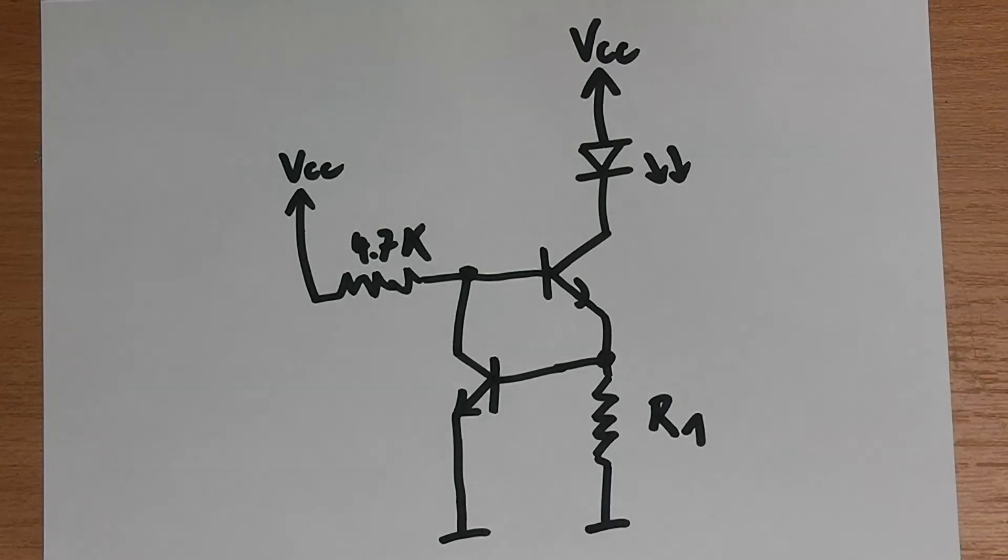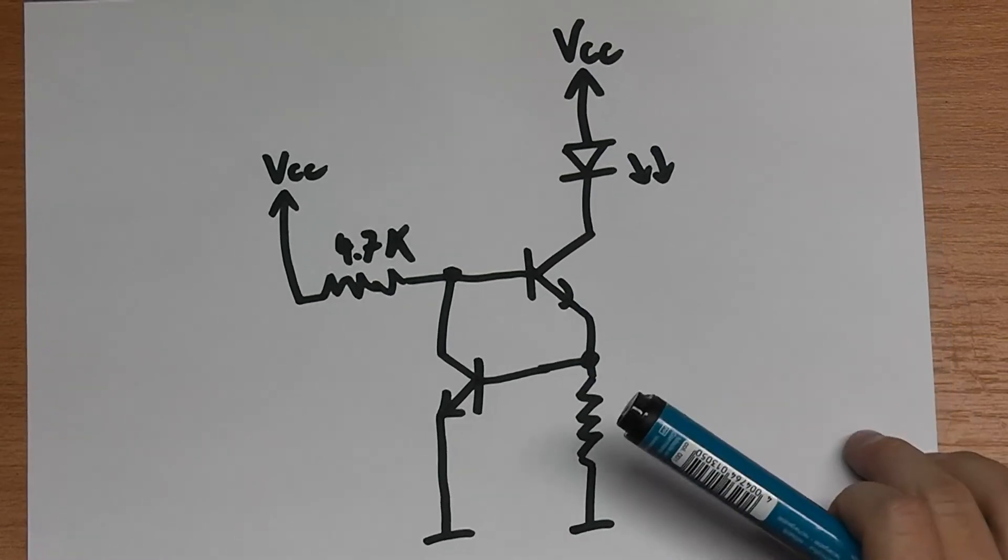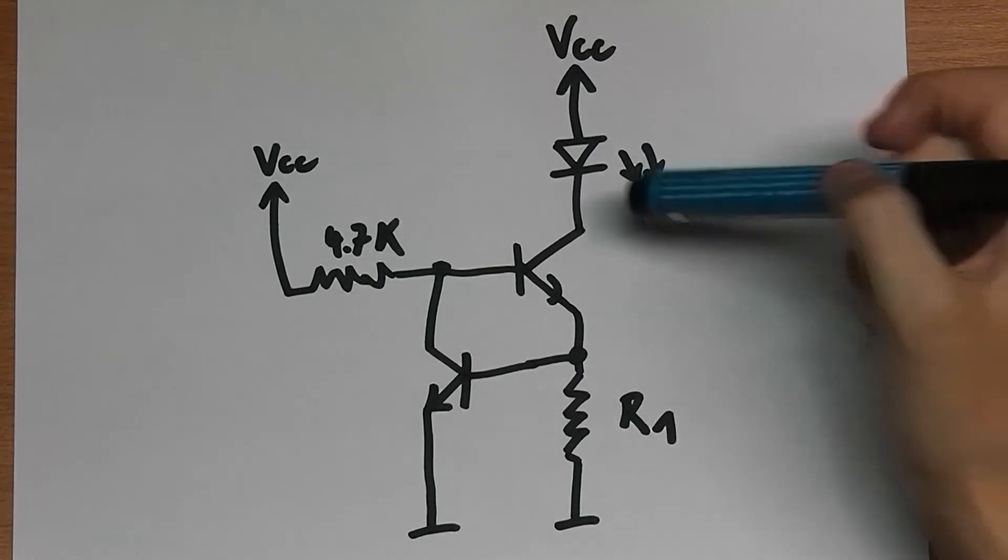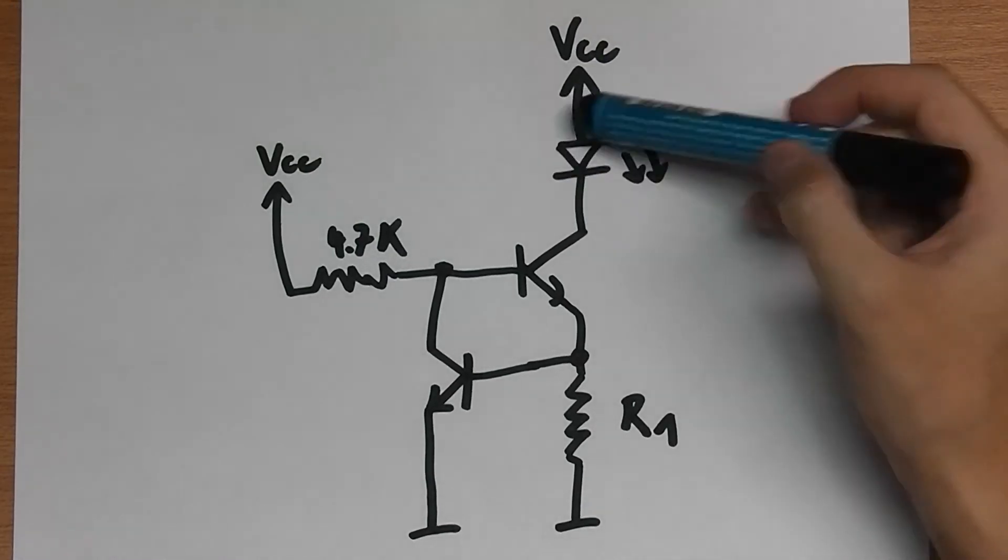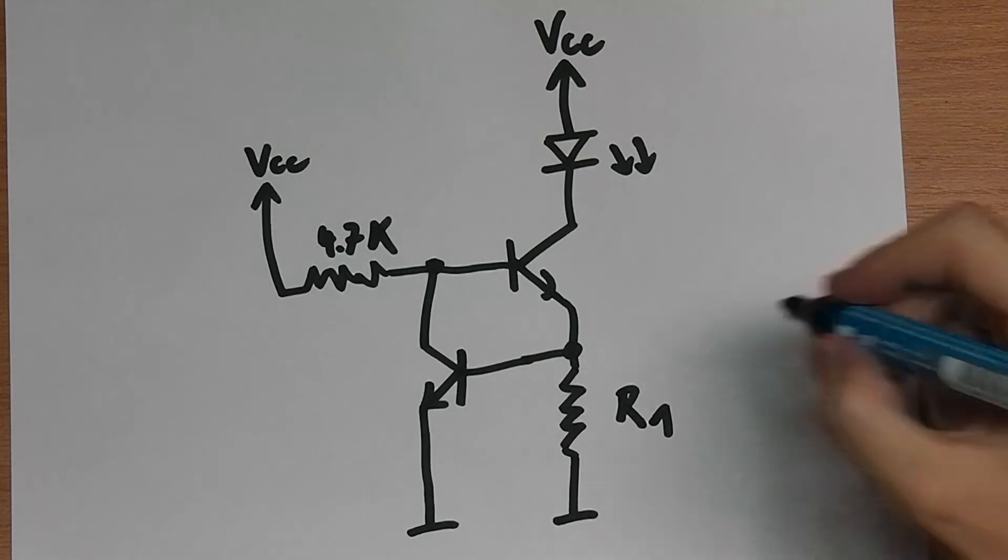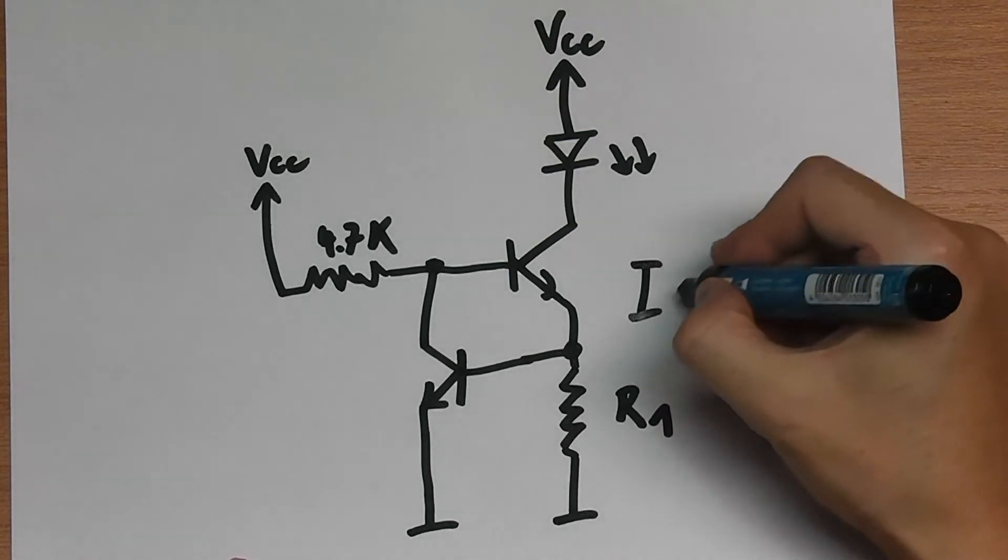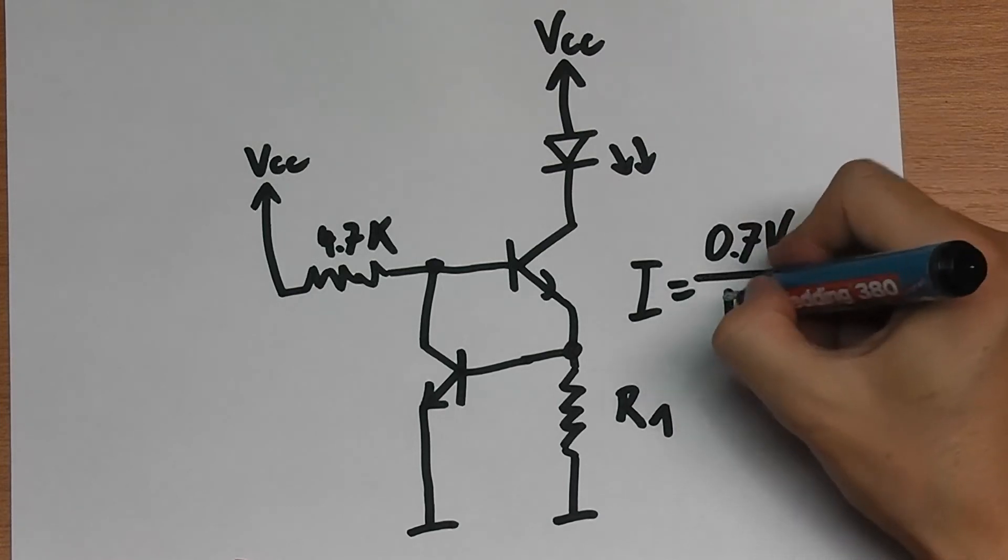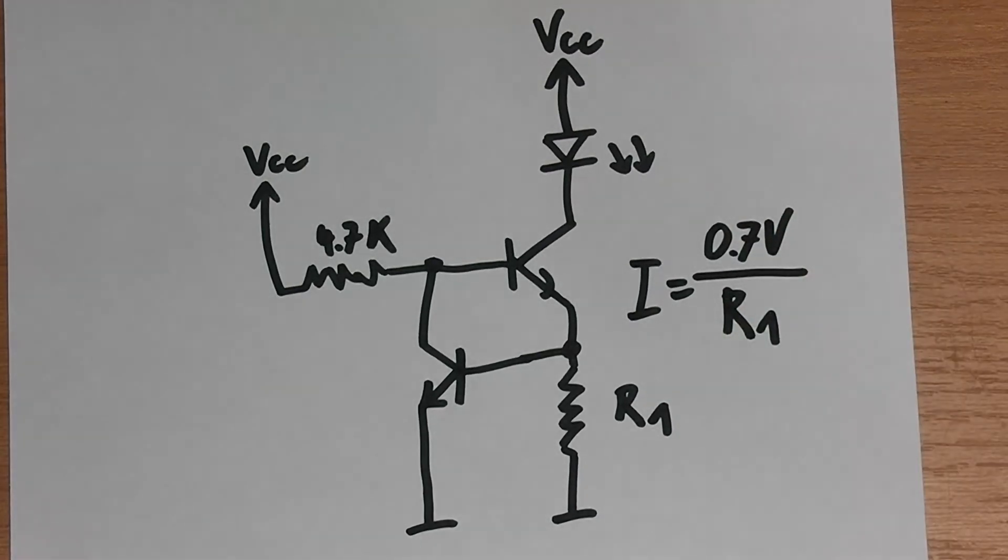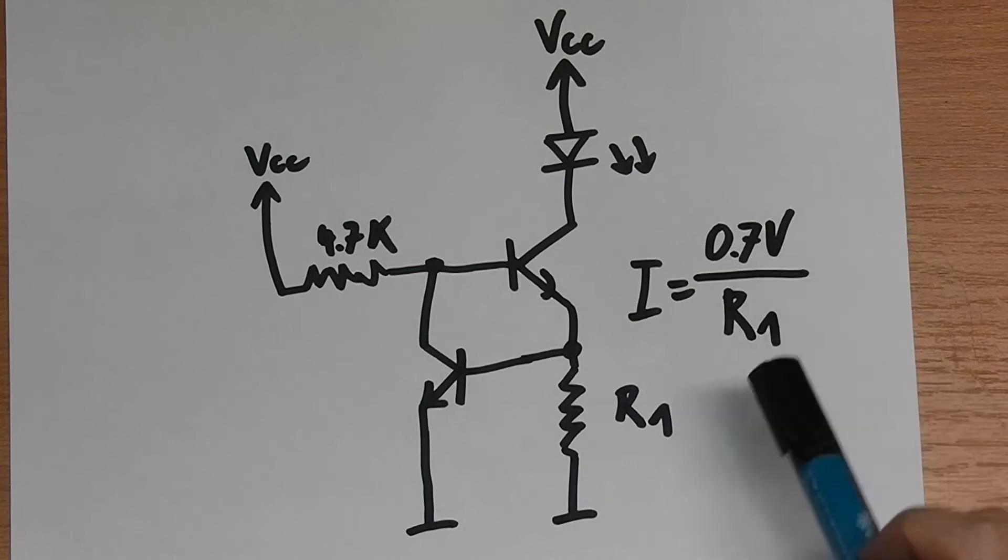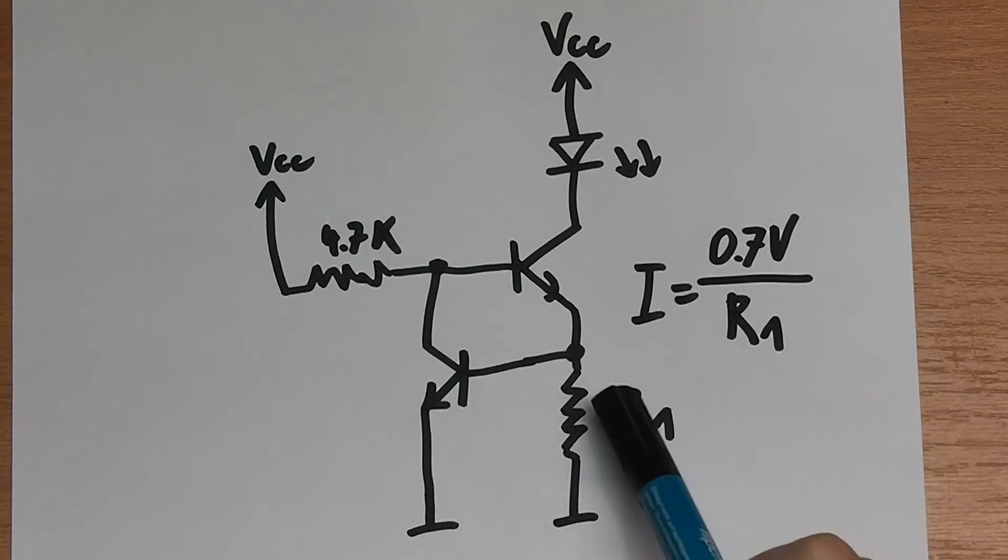And so basically the current is constant across the voltage here or the resistance here. Now the rule by which you can approximate the current which will flow down this path. And if I say current, I always mean short circuit current. So if you imagine you just put a short in here, what current will flow? So you can determine that by calculating I is 0.7 volts over R1. So the current you will have down here is 0.7 volts over the resistance that you place in here.